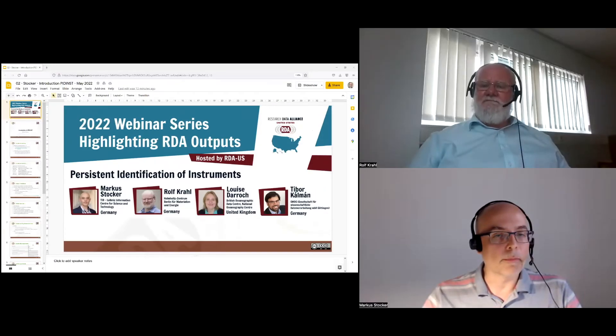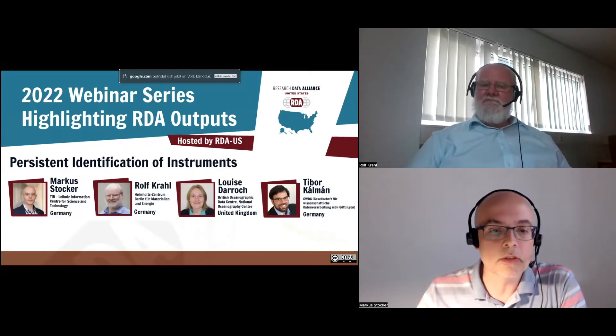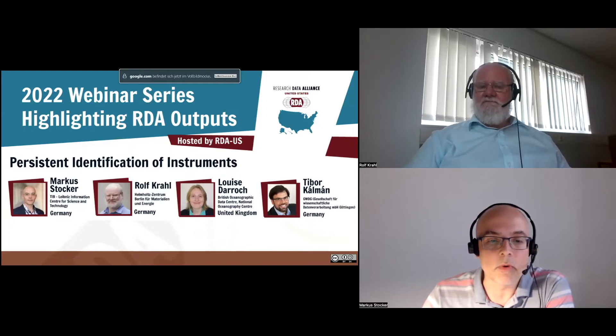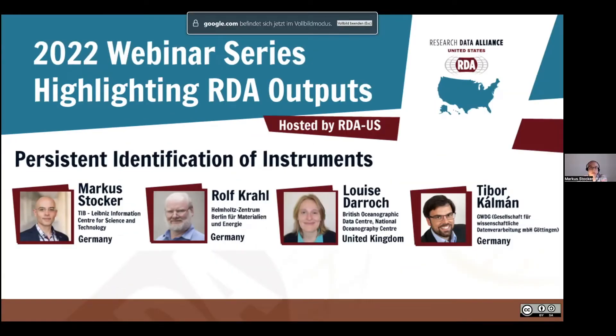I will share my own screen quickly. What I will do first is introduce shortly the speakers today, and after that I will give a short introduction to the RDA working group Persistent Identification of Instruments — what we did, the motivation, and a little bit of an outlook. Rolf Kral joins us from the Helmholtz Zentrum Berlin for Material and Energy in Germany, where he is responsible for scientific data management. Rolf has been a long-term co-chair in the working group, and his main responsibility has been the management of the schema, and he will talk about the schema in more detail.